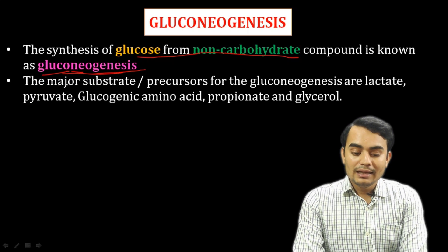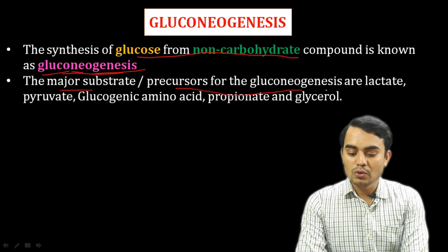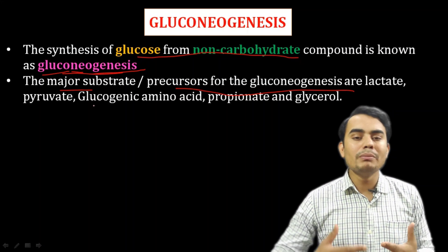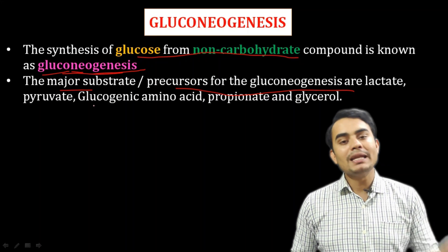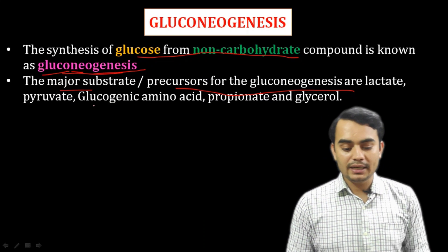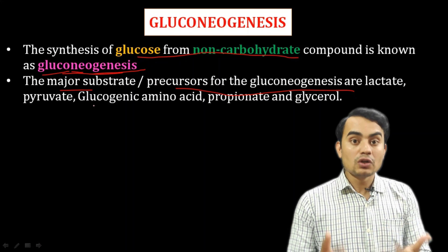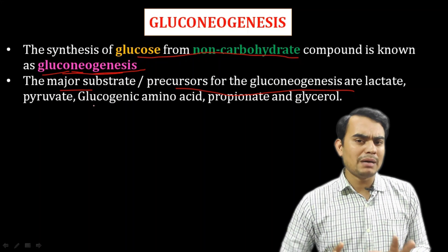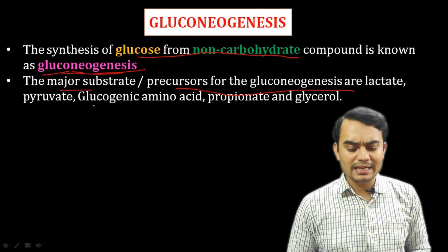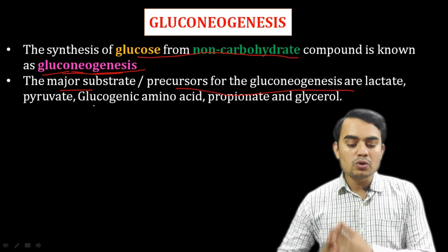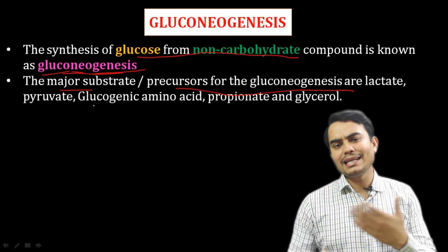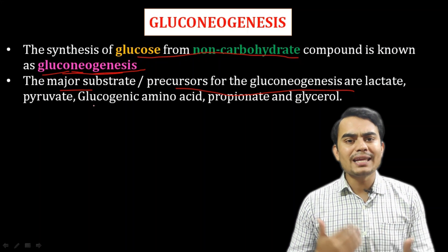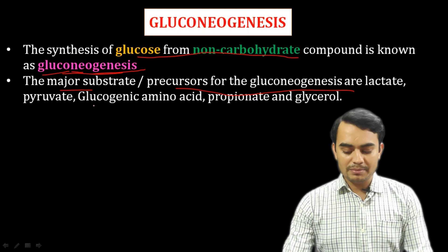The major substrate precursors for gluconeogenesis are: lactate, pyruvate, glucogenic amino acids, and glycerol — as well as propionate. So if we want to synthesize glucose from non-carbohydrate sources, it mainly comes from lactate, pyruvate, glucogenic amino acids, and glycerol. This video will explain what steps are involved in this process.